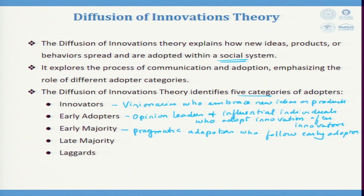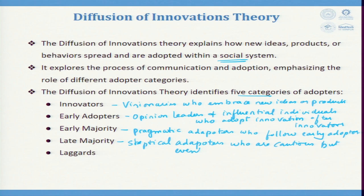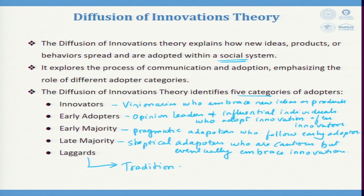Late majority are skeptical adopters who are cautious but eventually embrace innovation. And the last category, laggards, are traditionalists who are slow to adopt innovation.